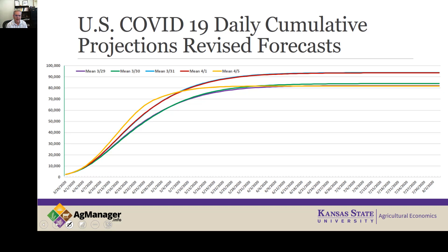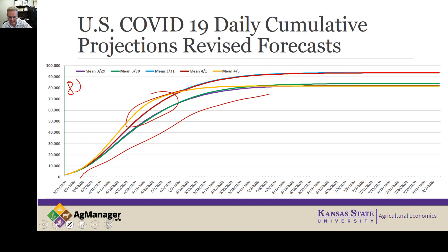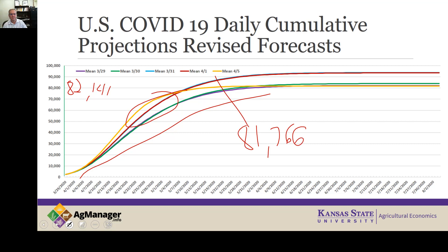Looking at the U.S. models, the purple line is largely covered under the green line. In some respects there's a little bit more slope to the curve, but in terms of where it ends up in total death projections: on March 29th, cumulative deaths in the U.S. were projected at 82,141, and the April 5th model ended up with a mean projection of 81,766. So between the original model and the model as of April 5th, there's a negative 0.4% decrease in the number of projected deaths.